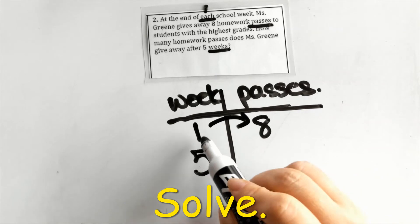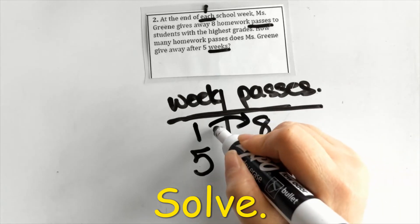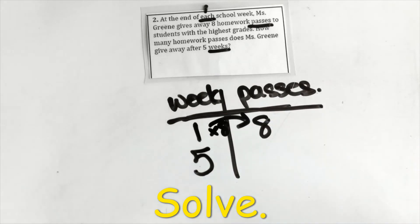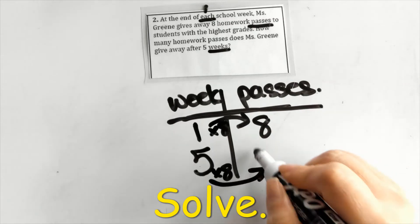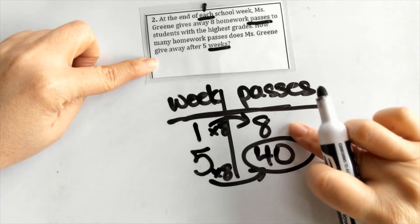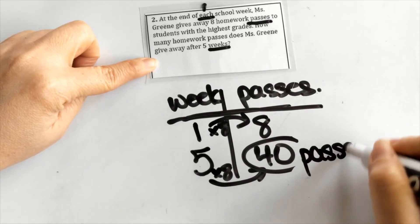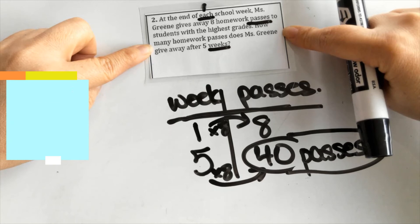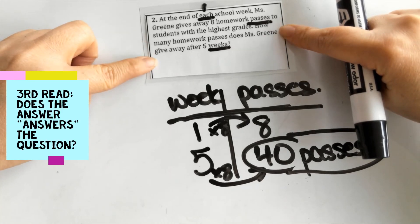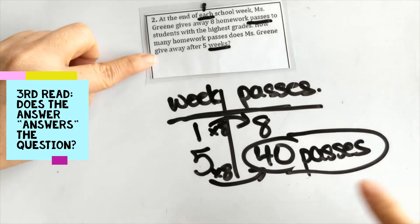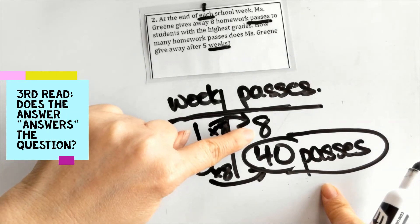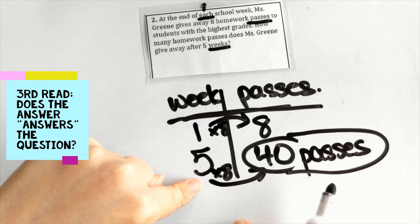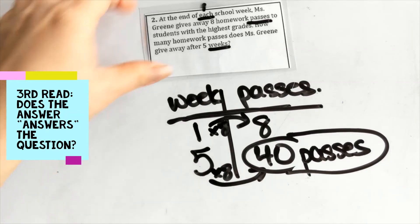Since this is a groups problem, we multiply or divide. I find the relationship: what do I multiply one by to get eight? It's times eight. So whatever I do on the weeks side, I do the same on the passes side — five times eight gives us 40 passes. That makes sense: if she gave away eight passes in one week, then in five weeks she gives away 40 passes.